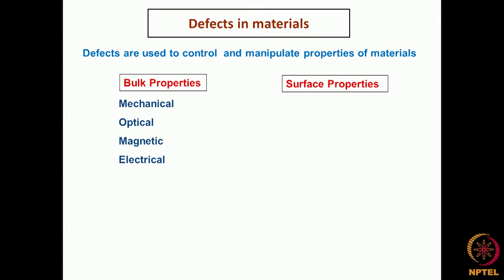Similarly, the other properties which we can change are the magnetic properties of the material. There is a material which is a soft magnetic material; by deforming it, we can make it into a hard magnetic material. Similarly, the electrical properties like electrical resistivity of a material can be changed by introducing defects into the material.